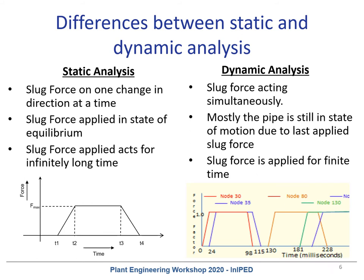The slug force magnitude and frequency help you choose the method of analysis. In a static analysis, force acts at one location simultaneously for an infinitely long period while the piping is in equilibrium. The standard approach in CAESAR 2 is to perform a static equivalent of dynamic analysis where slug forces are applied as a static load multiplied by a dynamic load factor — we call it DLF of 2 as a conservative approach. Selecting static analysis over dynamic analysis is time saving, but it is a compromise on accuracy of stress results, especially for a critical piping system under dynamic loading.